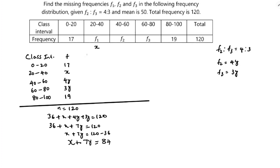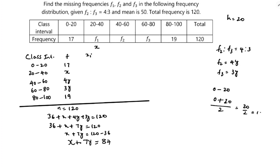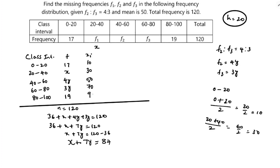To find the mean, I'll first find the class marks. The h value is 20, since any two consecutive lower limits like 20 minus 0 or 60 minus 40 gives 20. Class marks: 0-20 gives 10, 20-40 gives 30, and adding h=20 each time gives 50, 70, and 90.